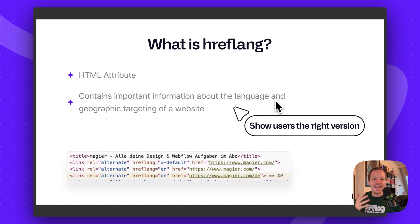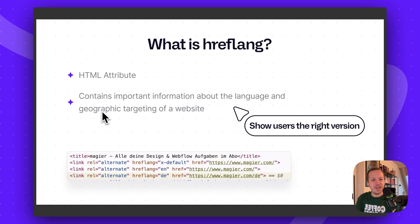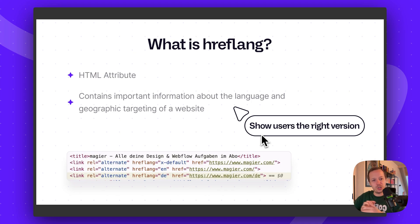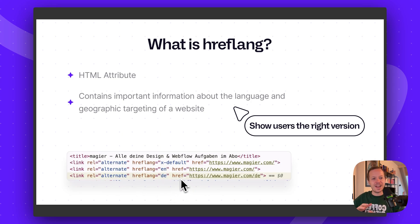We are using something called hreflang. It's an HTML attribute — something in your source code — that contains important information about the language and the geographic targeting of a website. Basically, it has all the information needed to show the user the right version.